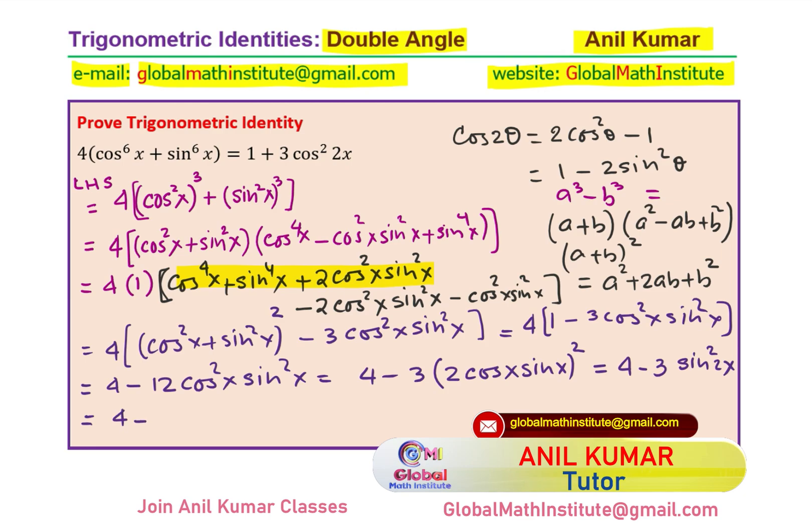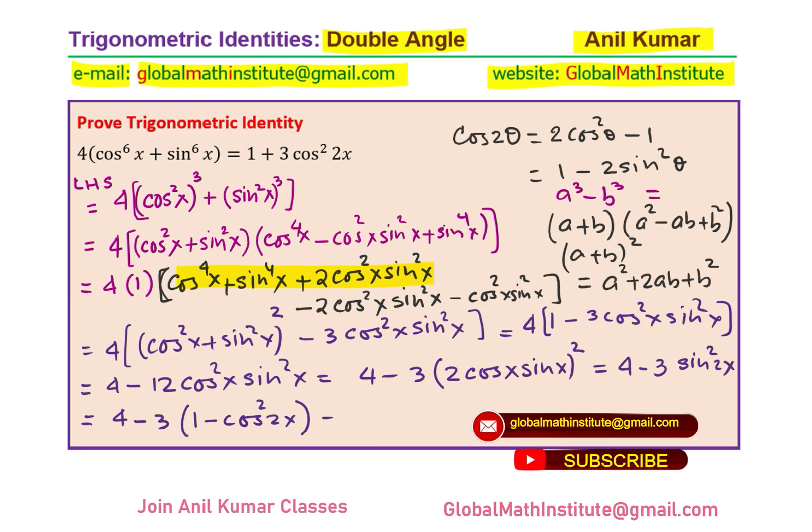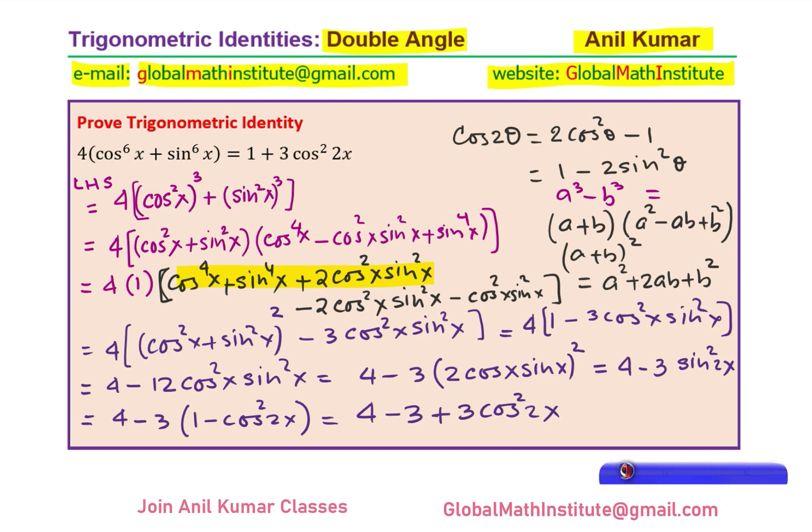Now we have 4 minus 3 and sin square 2x can be written as 1 minus cos square 2x. Let's open this bracket. 4 minus 3, minus and minus becomes plus 3 cos square 2x. 4 minus 3 is 1 and then we have plus 3 cos square 2x. Which is the same as right hand side, and so we have shown that this identity is proven when left side is equal to right hand side.